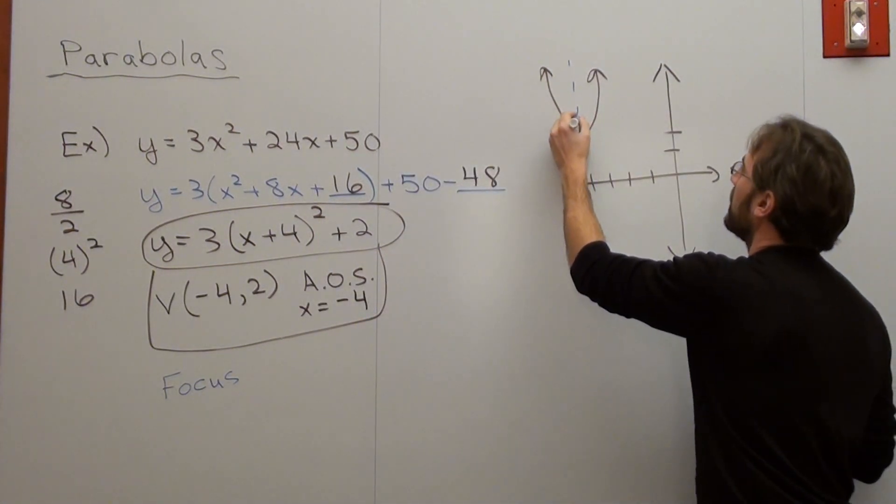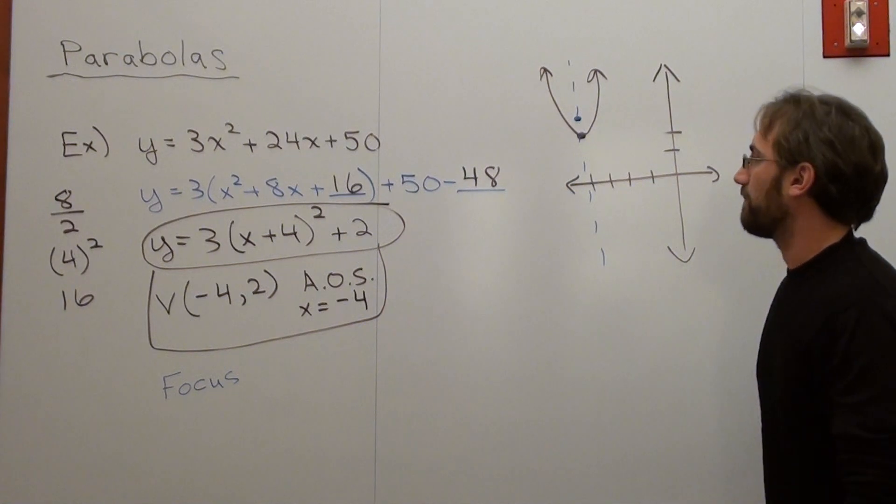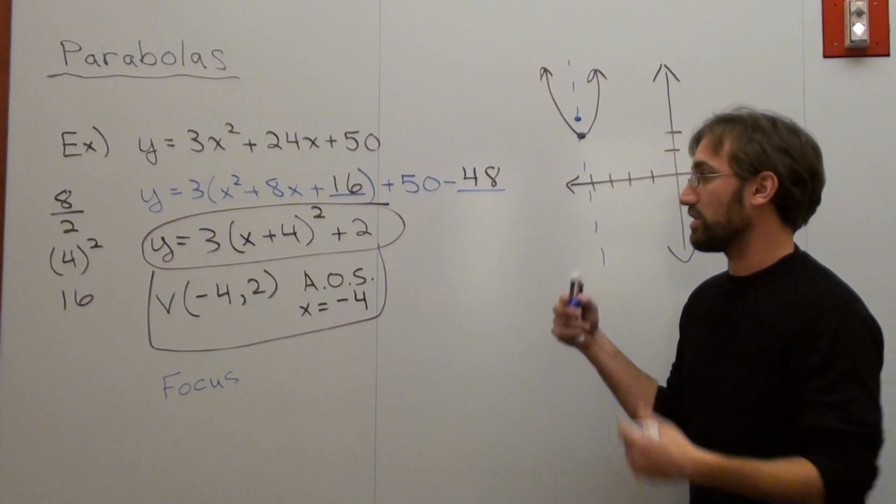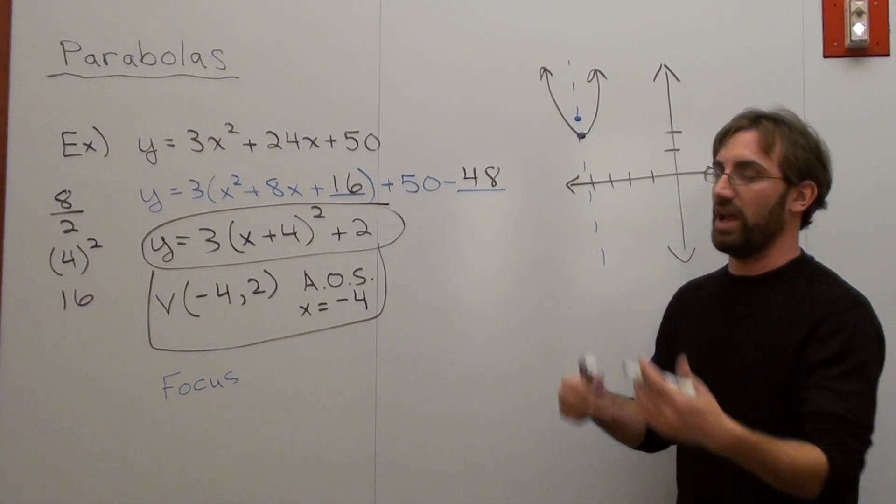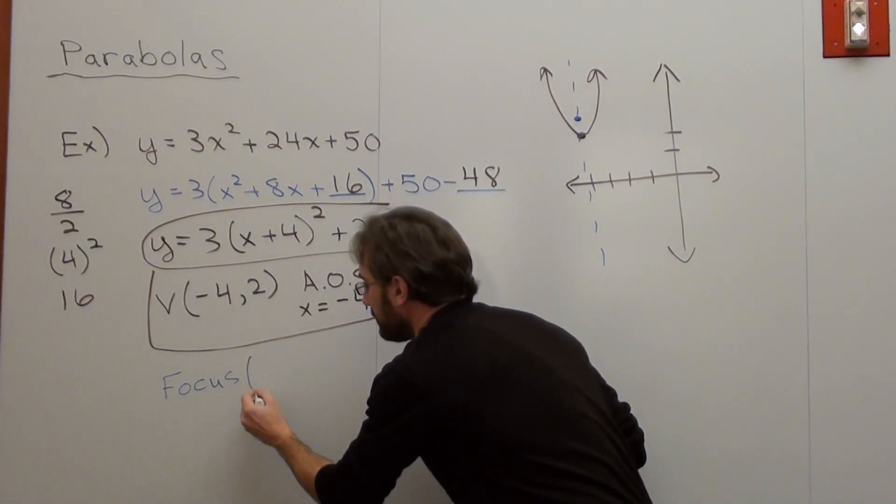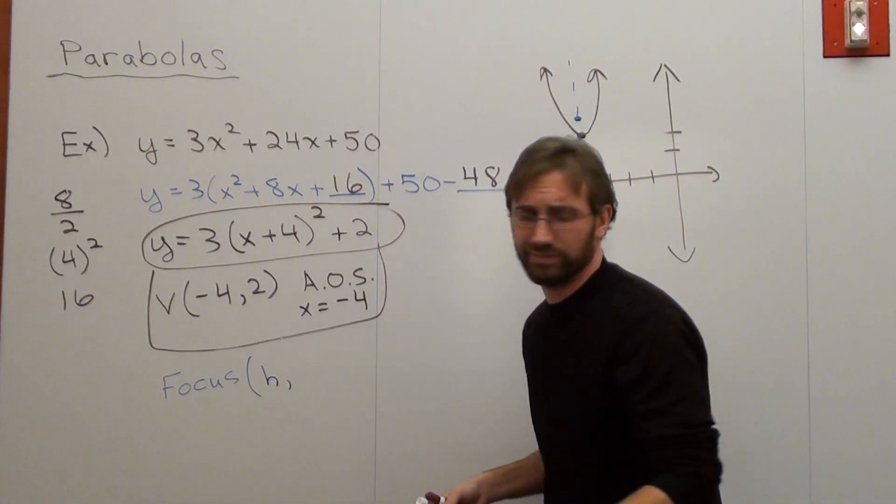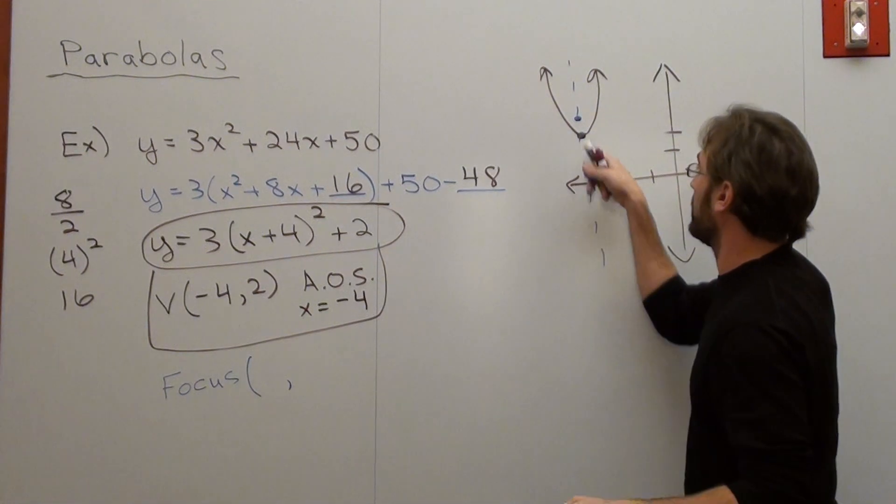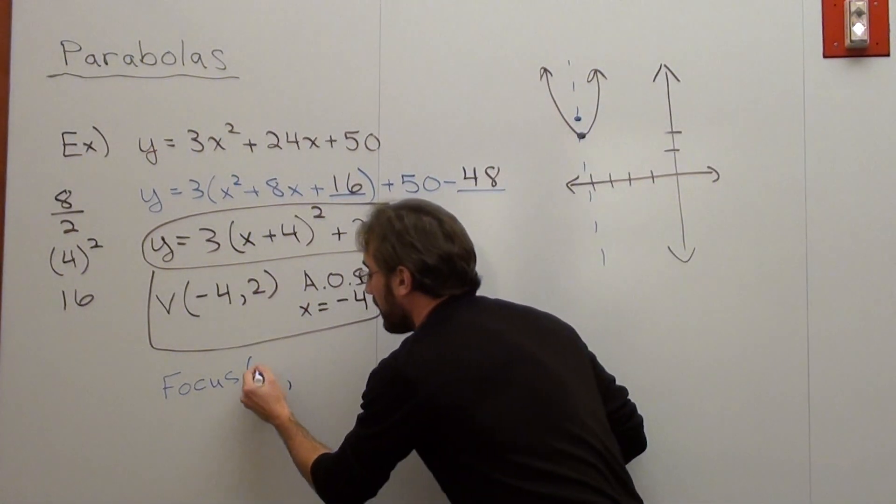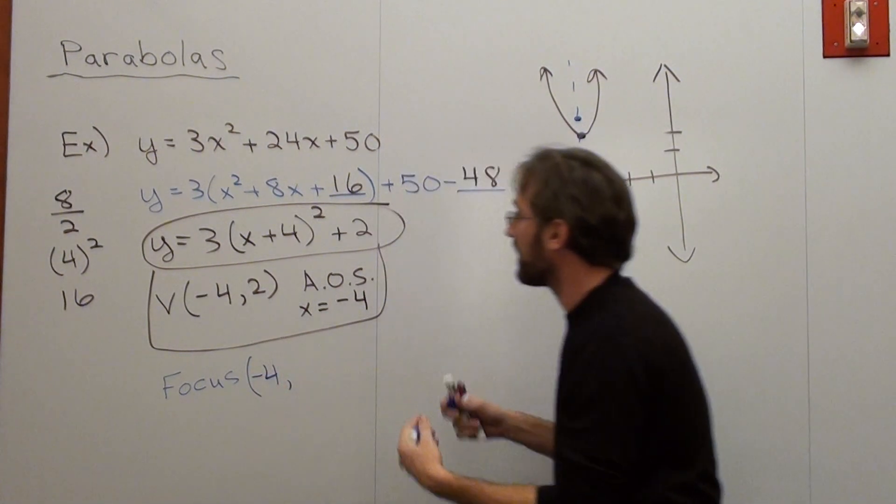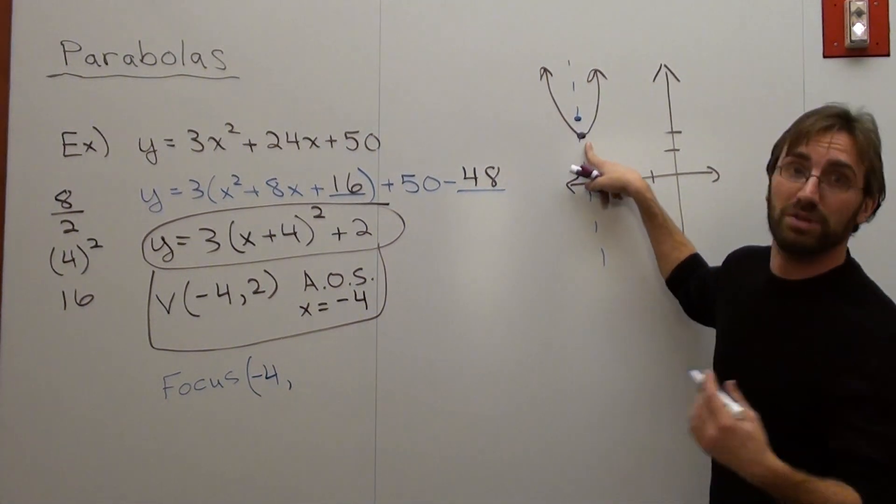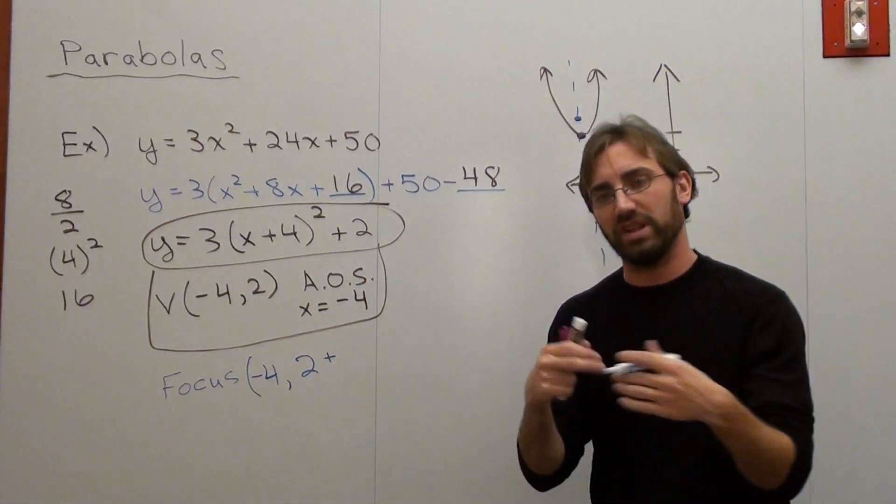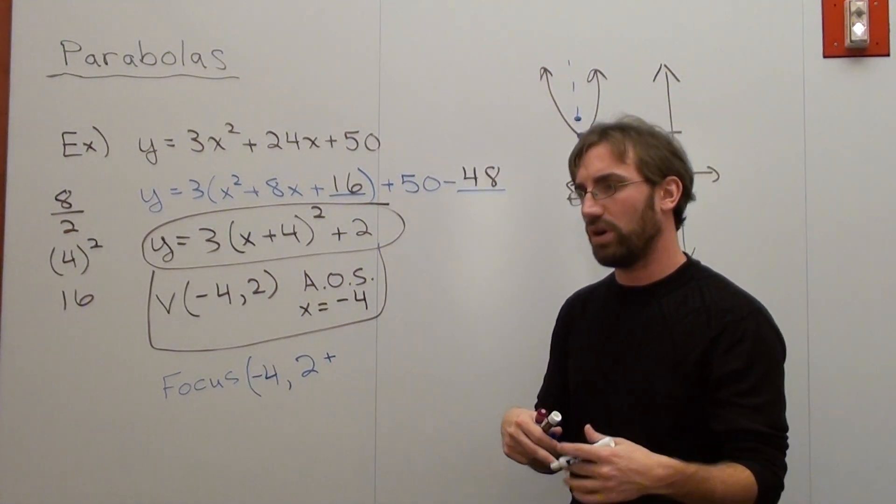So the focus is going to be somewhere. And in this case, it's going to be right there. It's going to be above the vertex. So my focus is going to be my H value. It's going to be at negative 4. It's going to line up with the vertex. And then it's going to be whatever the K value is. Now the K value happens to be 2. So it's going to be 2 plus, and then the formula that I gave was 1 over 4a.